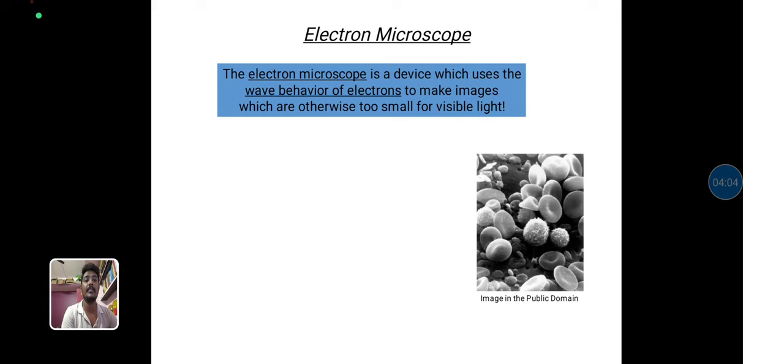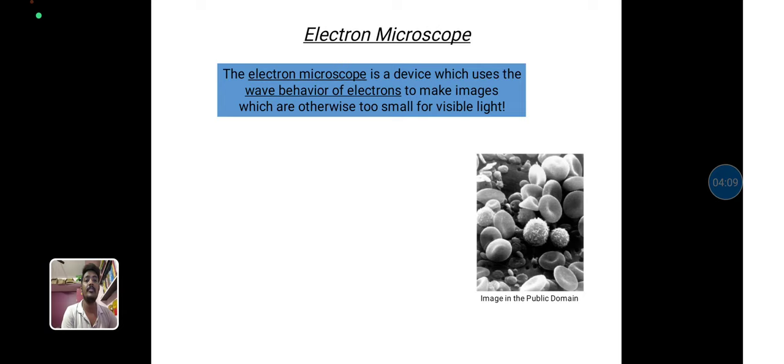Next one is the electron microscope. The electron microscope is the device using the wave behavior of an electron to make images which are otherwise too small size for the visible light. The image was taken with the scanning electron microscope. The scanning electron microscope resolves features as small as 5 nanometer. This is about 100 times better than the normal microscope. This is the sample example for this image.